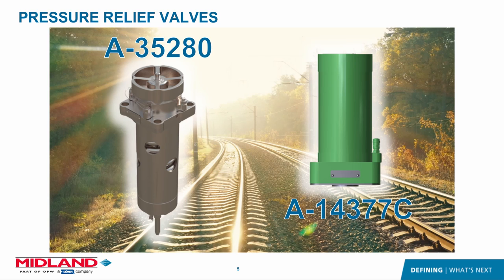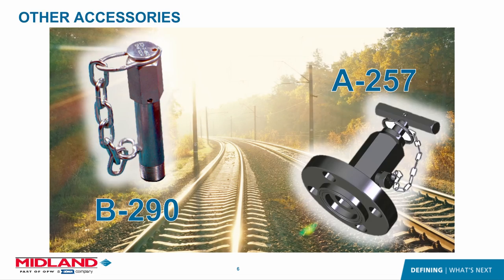When you have an external one, you also consider what commodity you have to determine which style you would want. Another accessory we would see on a pressure car is our thermal well, the B290. This is mainly used to take the temperature of the product inside the tank car through the stainless steel tube with a thermal probe or long thermometer. This helps adjust the outage of the tank car when loading to ensure you do not overfill it. Next to it we have the A257 needle valve.